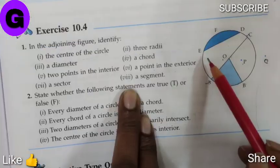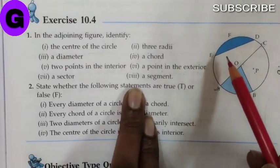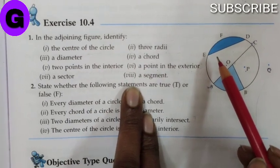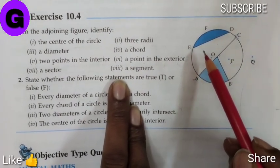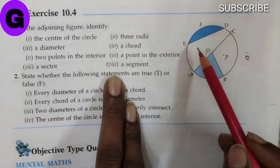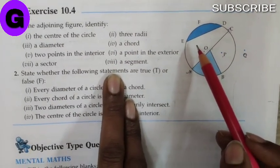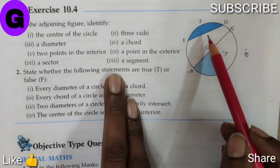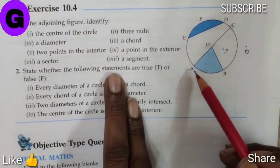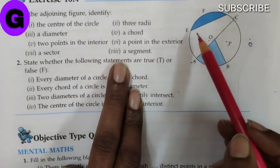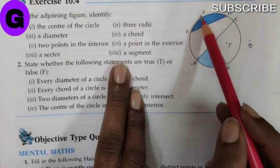A segment. The chord of a circle divides a circular region into two parts and each part is called the segment of the circle. The smaller part is called the minor segment and the larger part is called the major segment. So, here the segment is E, F, D.